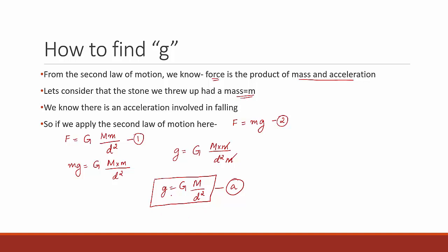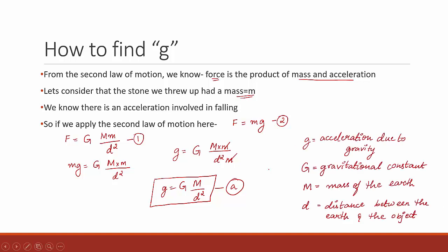So acceleration due to gravity g equals the gravitational constant G times the mass of the earth M, divided by the square of the distance d between the object and the earth. Here, G is the gravitational constant, M is the mass of the earth, and d is the distance between the earth and the object. This is Equation A, which is extremely important.